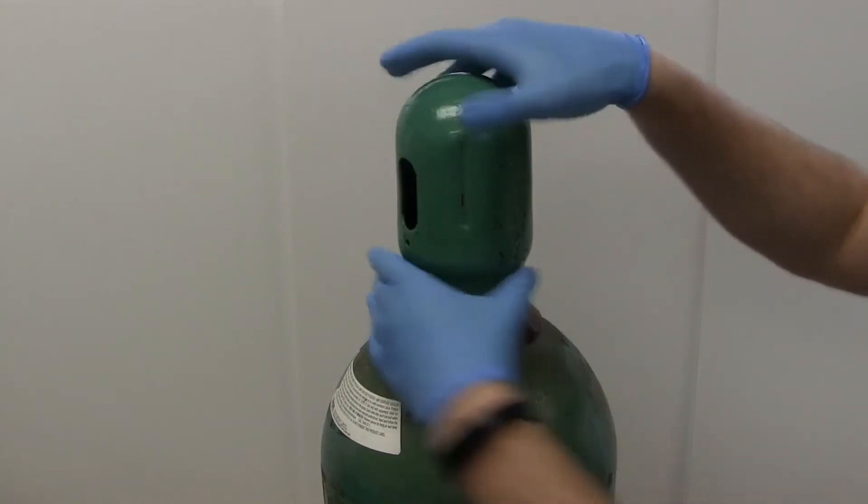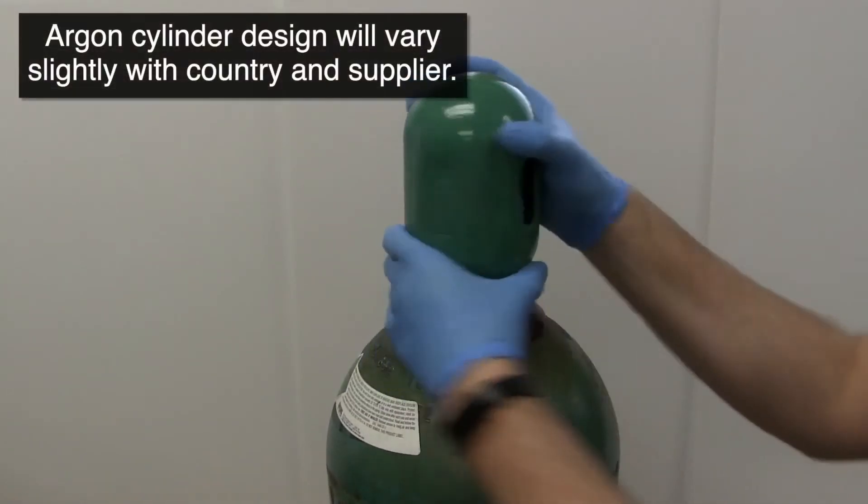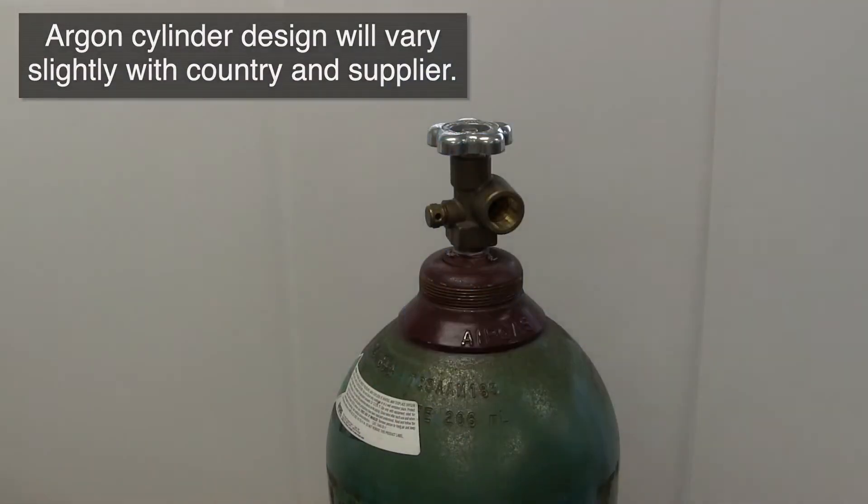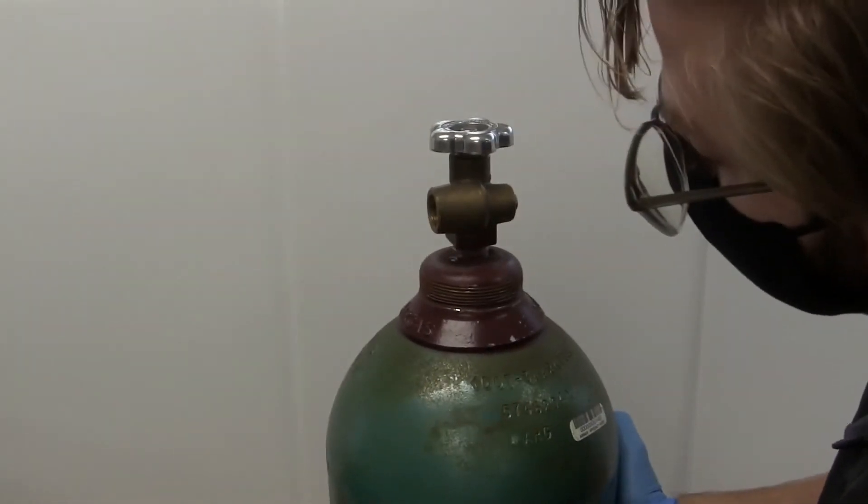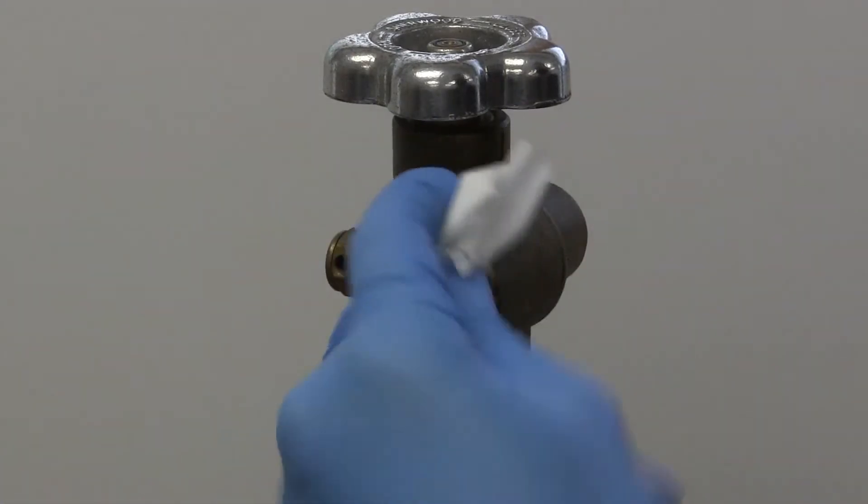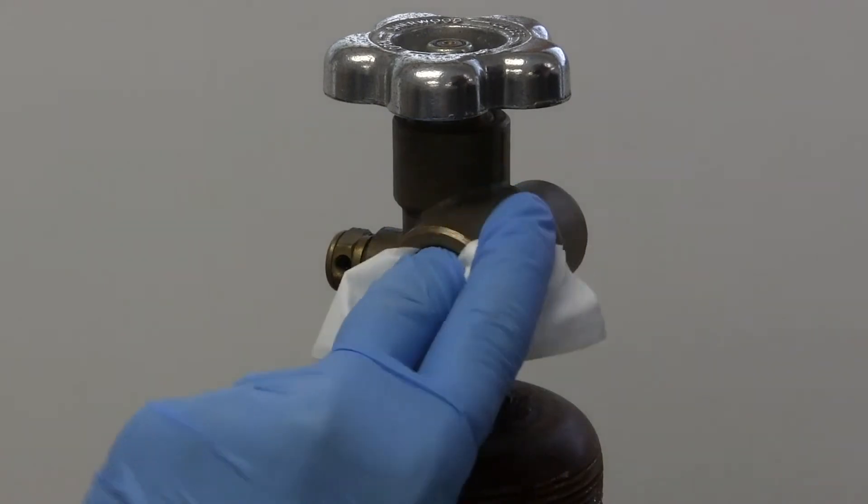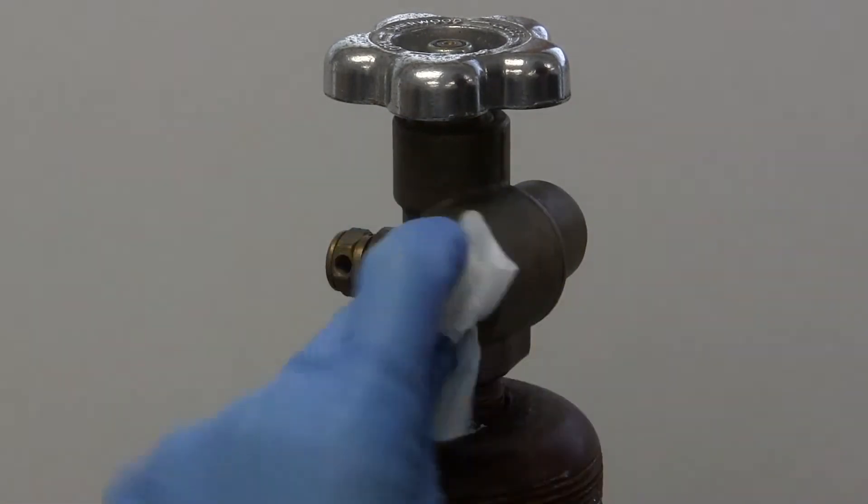Remove the cap covering the cylinder outlet and set it aside. If necessary, rotate the cylinder so that the attached regulator will be accessible to the user. Clean the cylinder outlet with an acetone-soaked wipe. This may take several wipes.